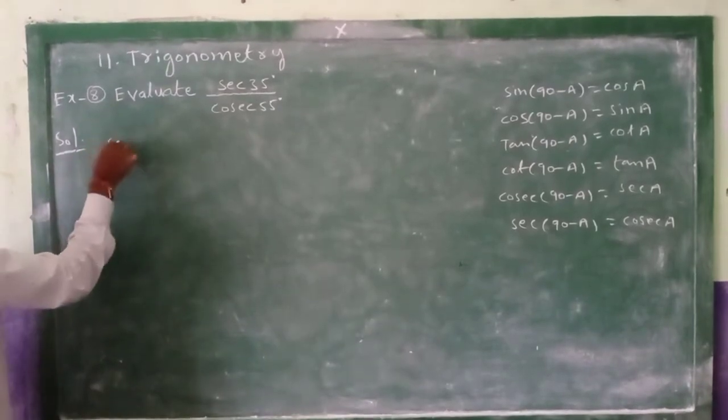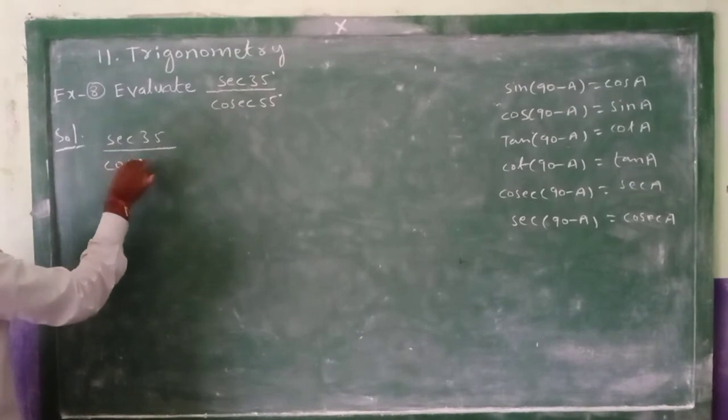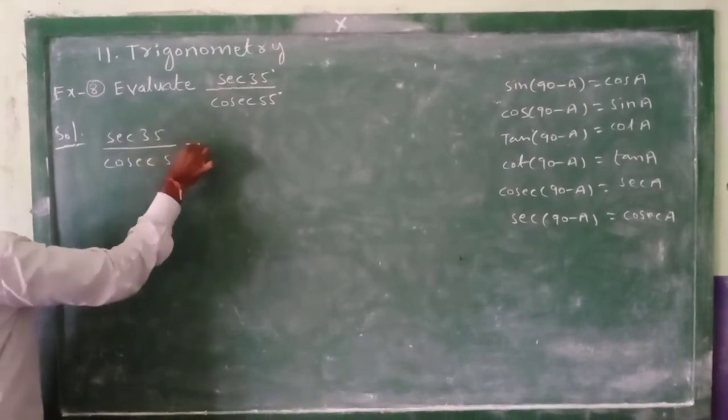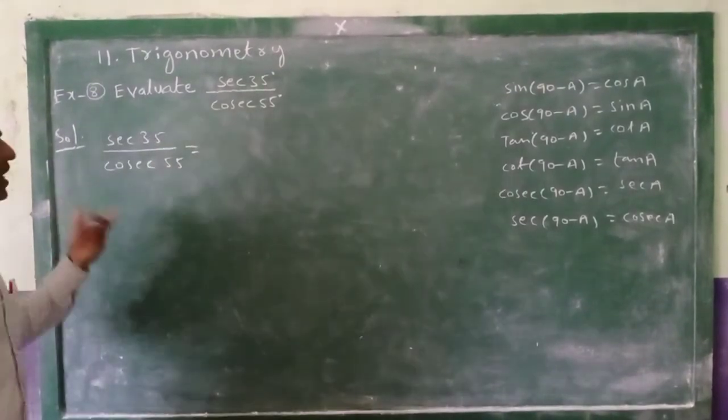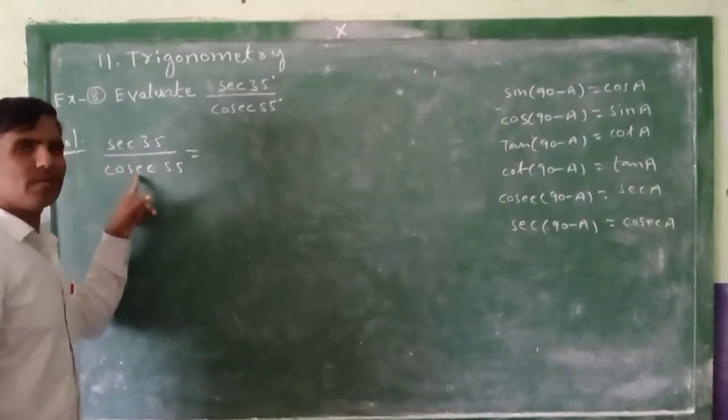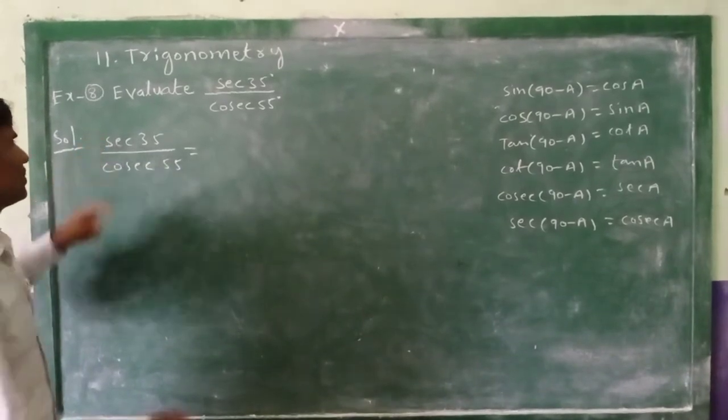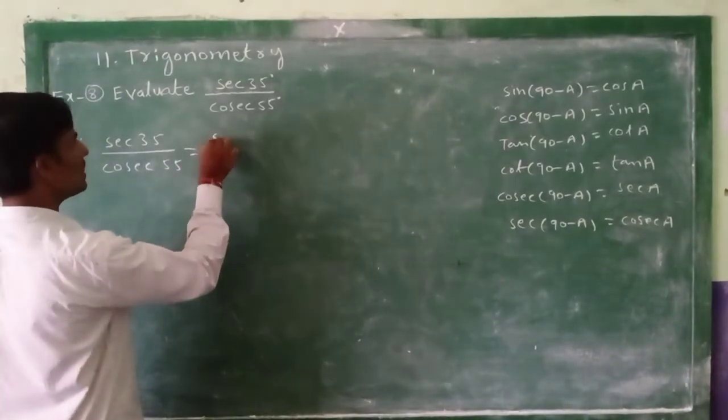So secant 35 divided by cosecant 55 equals - anyone can change either numerator or denominator. In this I want to change this one.